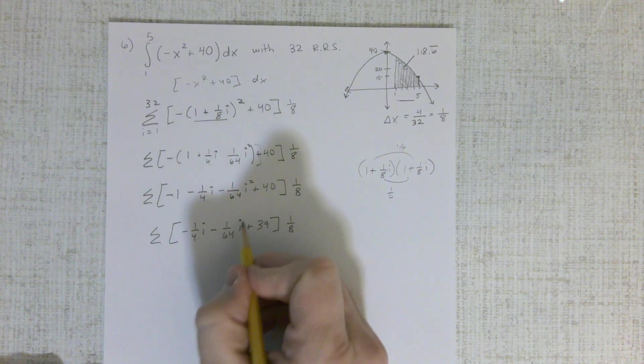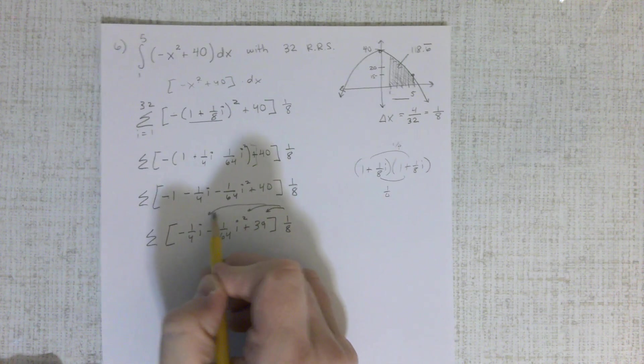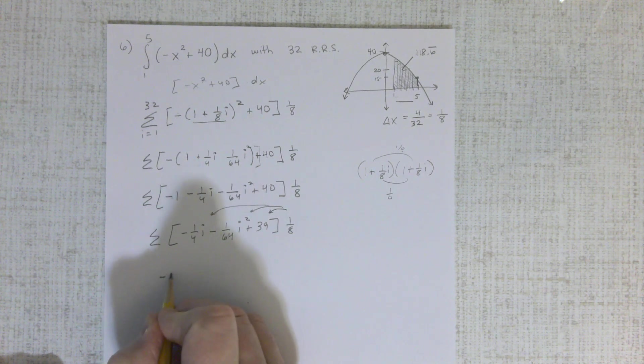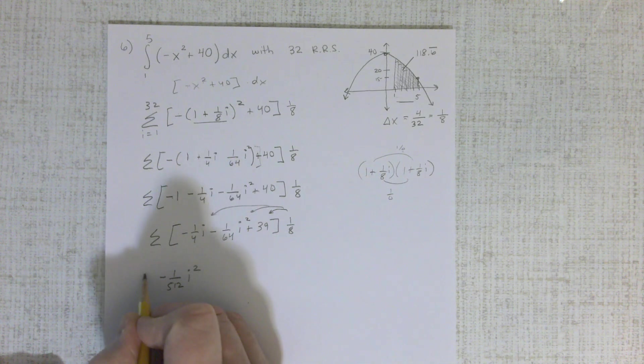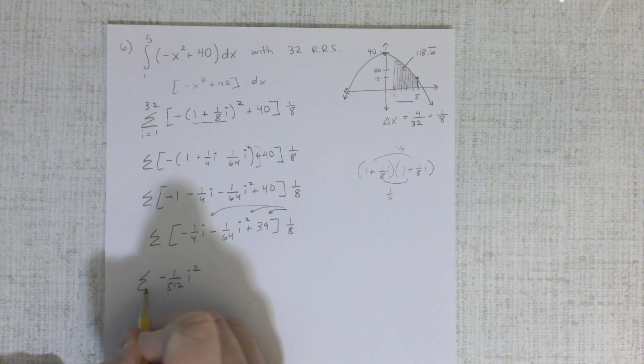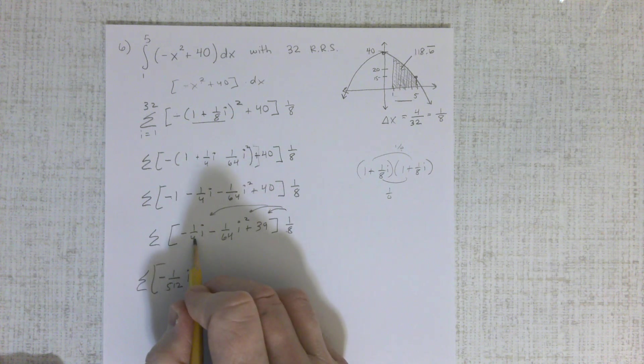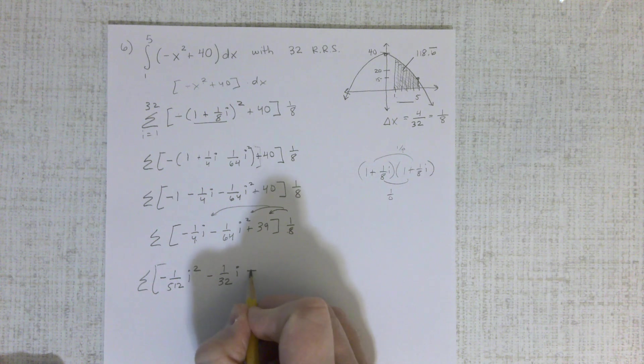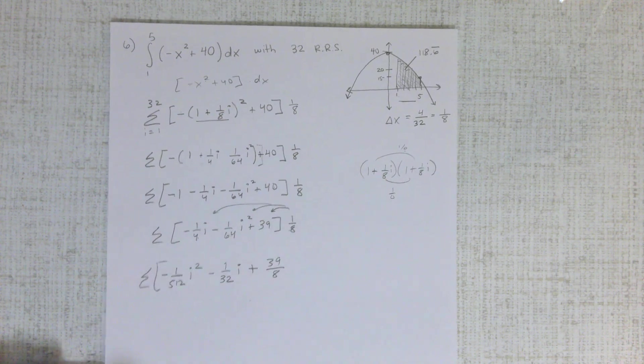And here's where I like to just put stuff in order. I'm going to distribute this into all of them, but I like to put this one first. So that's a negative 512 i squared. And then this times that one, the negative 132 i. Then this one times that one is 39 over i.